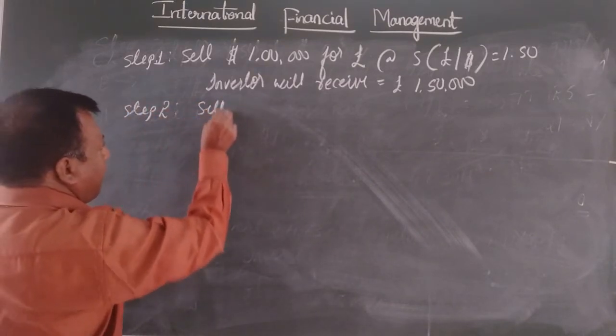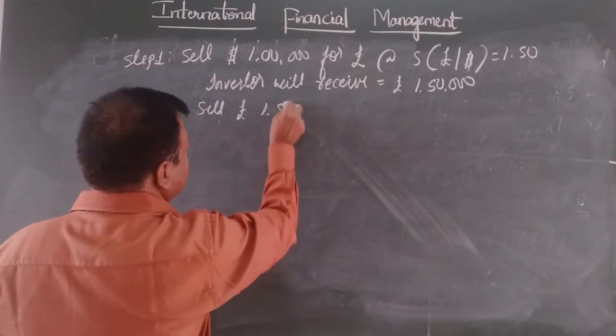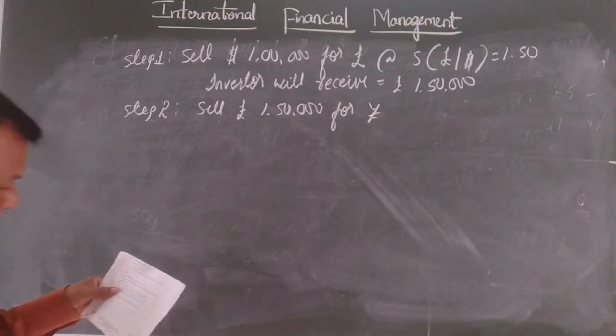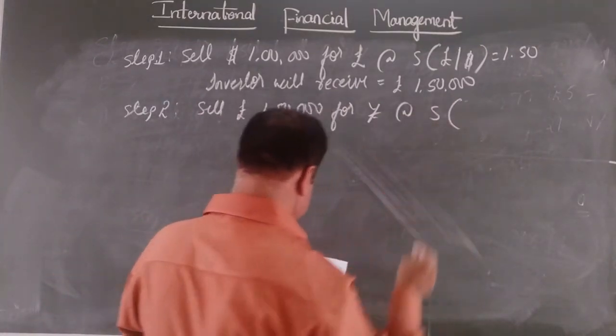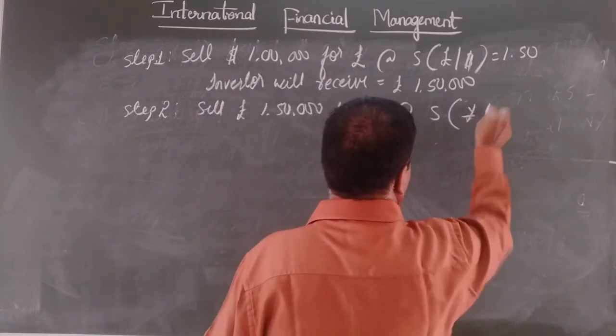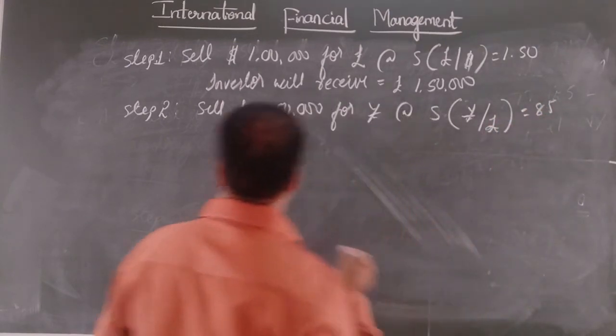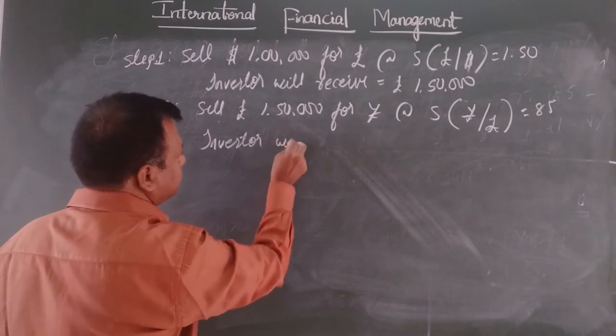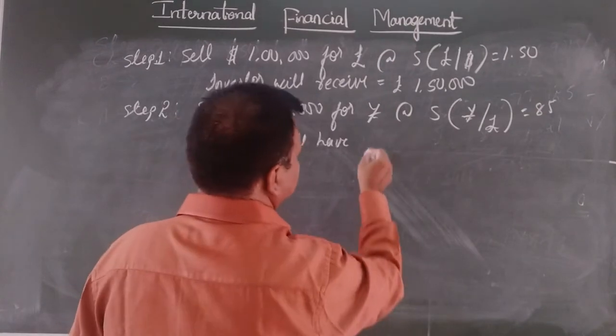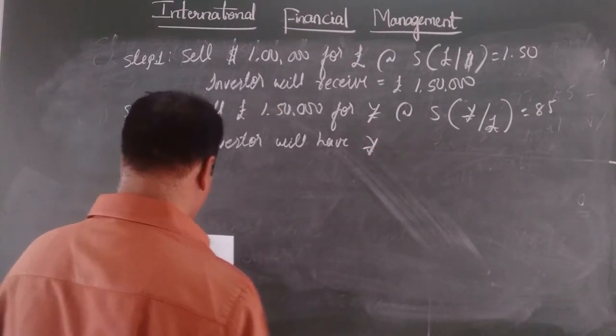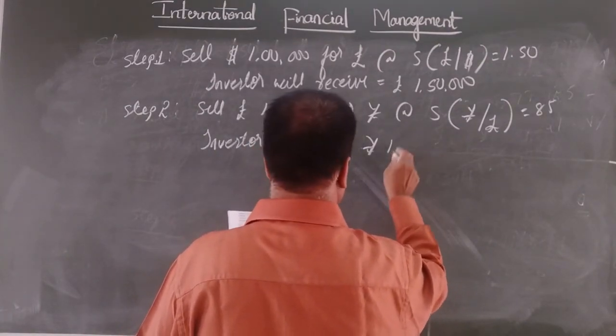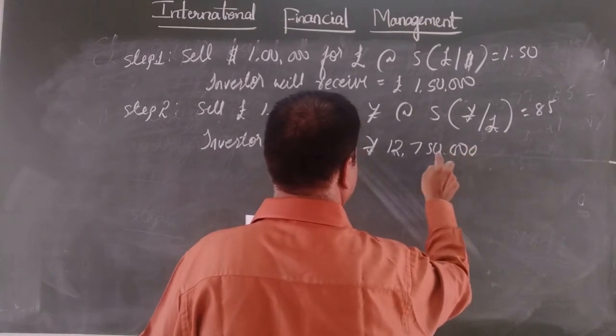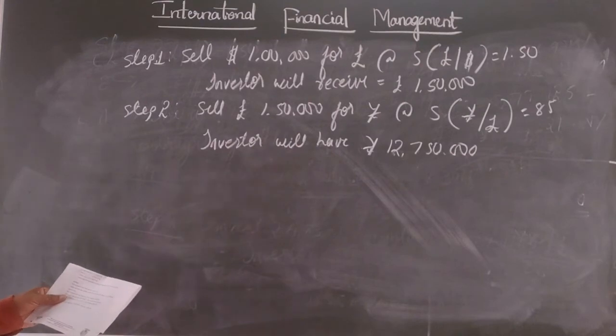And in step 2, sell pound 1 lakh 50,000 for yen, sell pound 1 lakh 50,000 for yen at spot rate of yen by pound 85. Since, investor will get, if we calculate how much investor will have, investor will have yen of 1 crore 27 lakh 50,000.